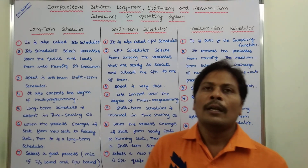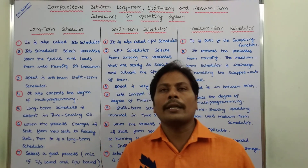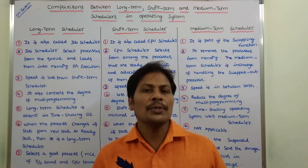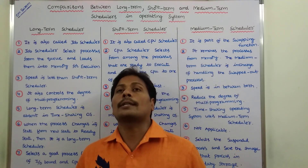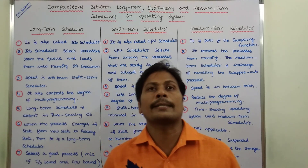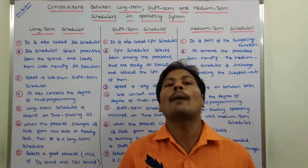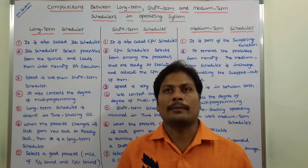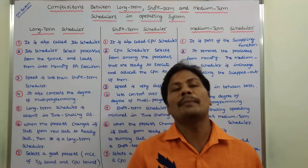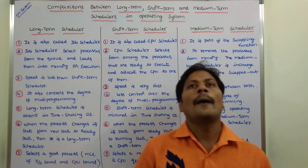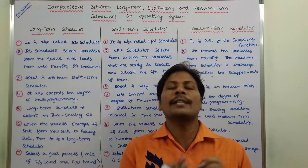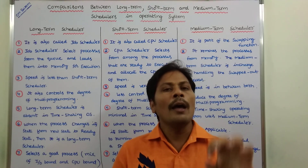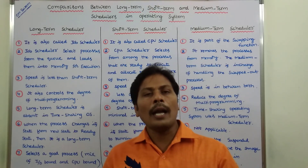The third difference: the long-term scheduler is slower when compared to the short-term scheduler. The short-term scheduler is faster when compared to the long-term scheduler. The medium-term scheduler operates at an average speed, in between the speed of the long-term scheduler and the short-term scheduler.